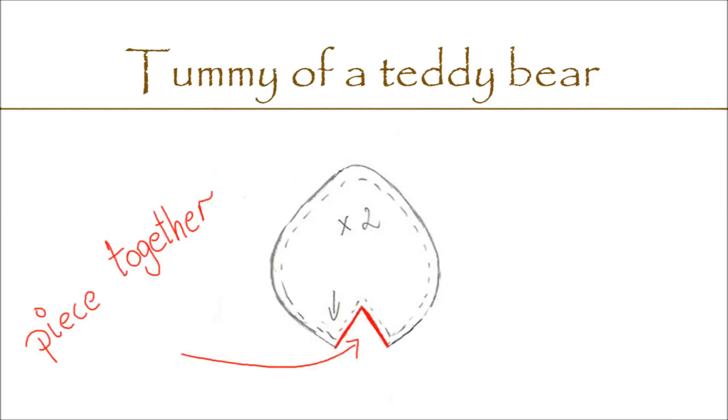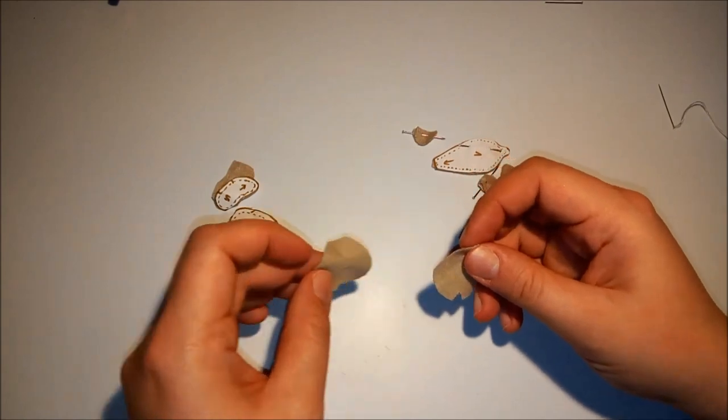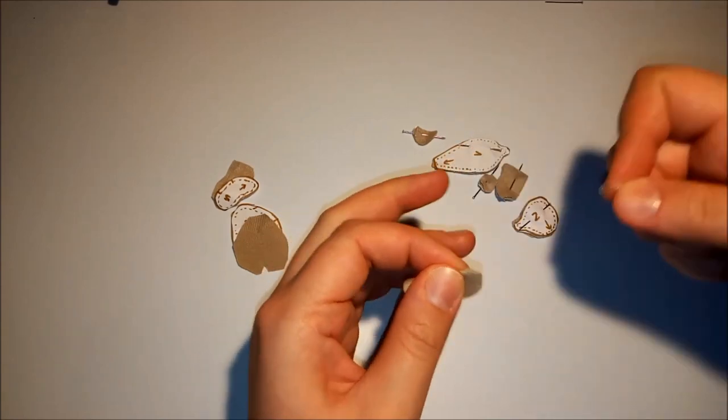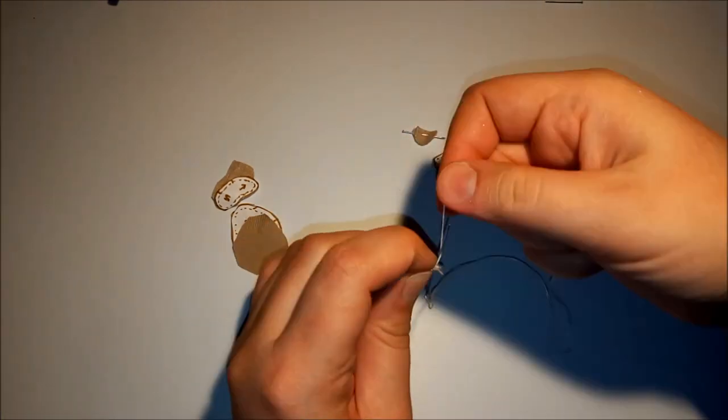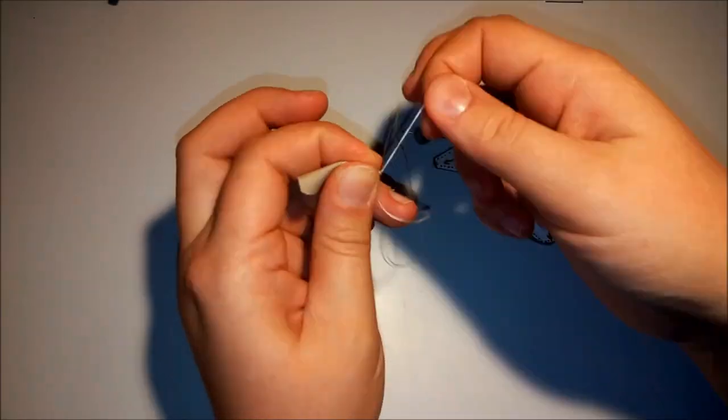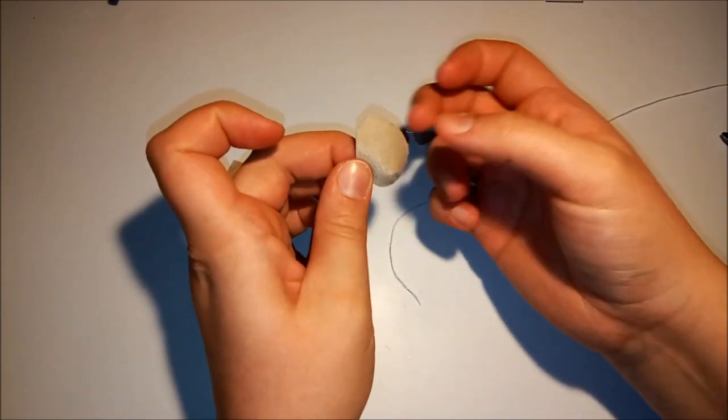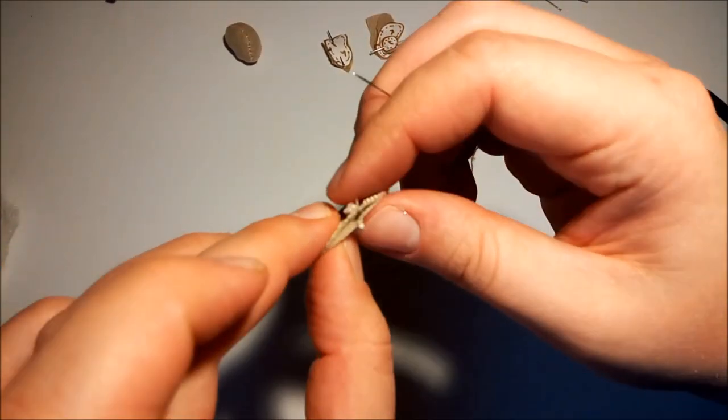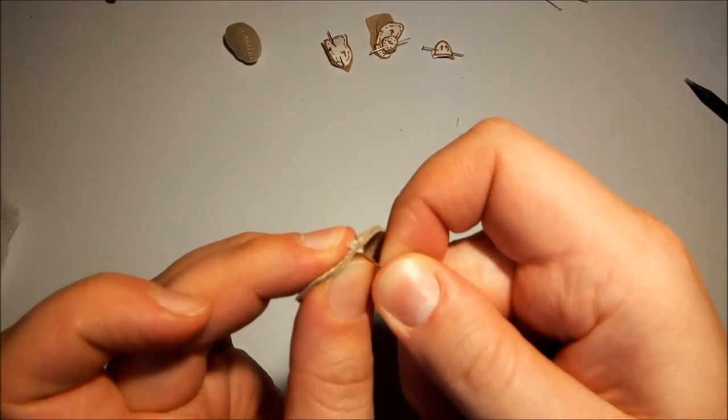First we sew the tuck in the picture marked in red. When we have stitched on both sides, we sew together leaving a small hole.